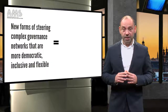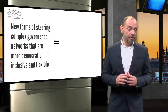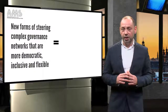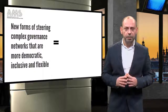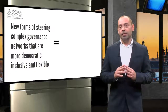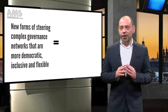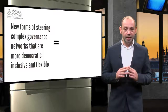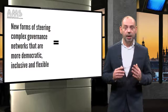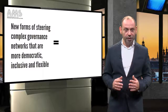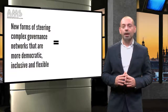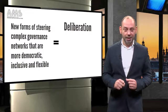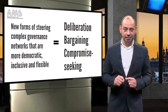This means that metropolitan innovators must adopt a new attitude towards problem-identifying and problem-solving. They must find new forms of steering complex governance networks that are more democratic, inclusive, and flexible. The key words are deliberation, bargaining, and compromise-seeking.